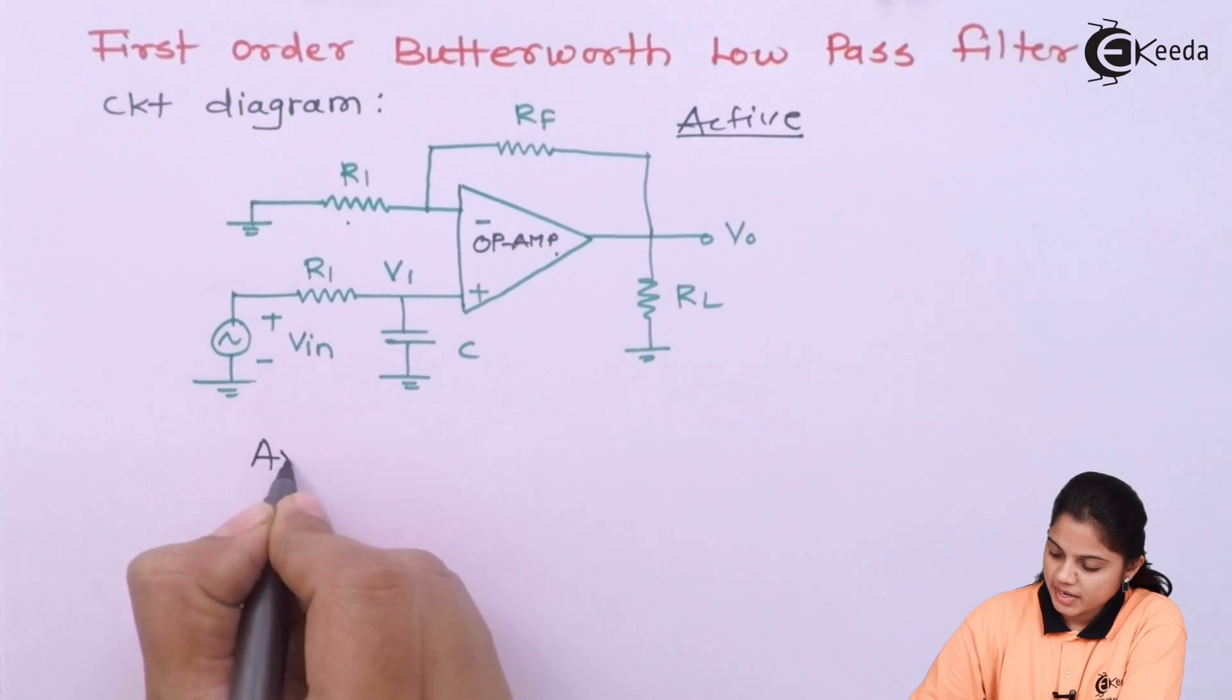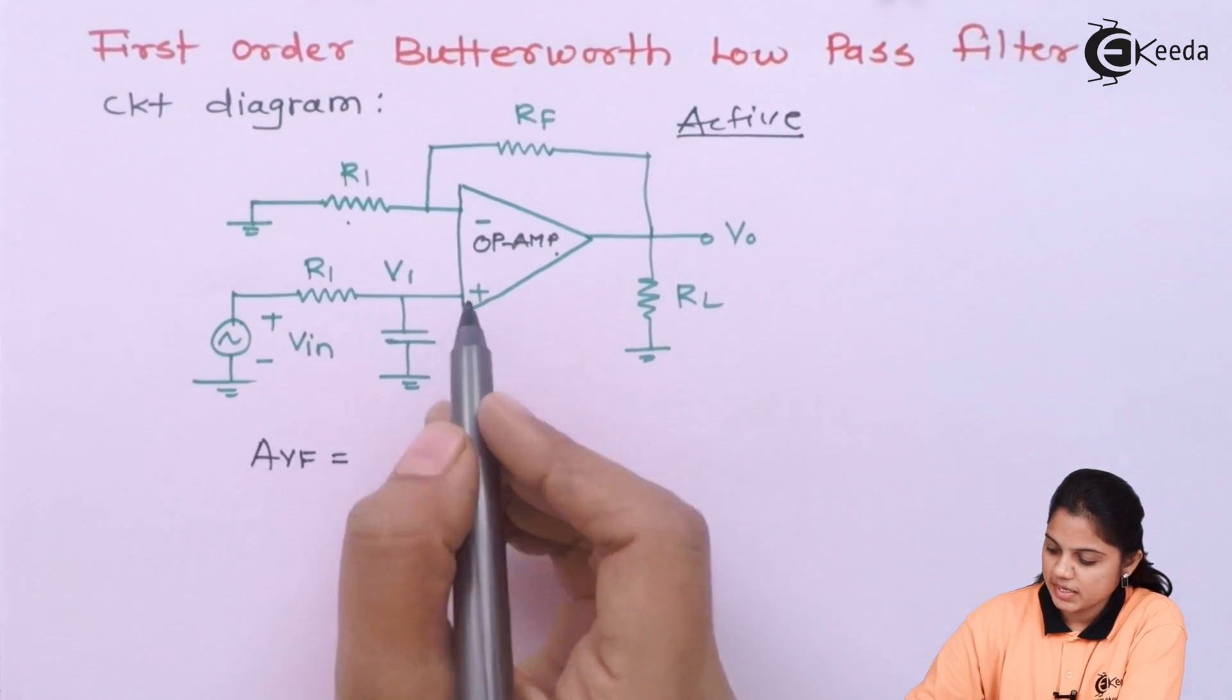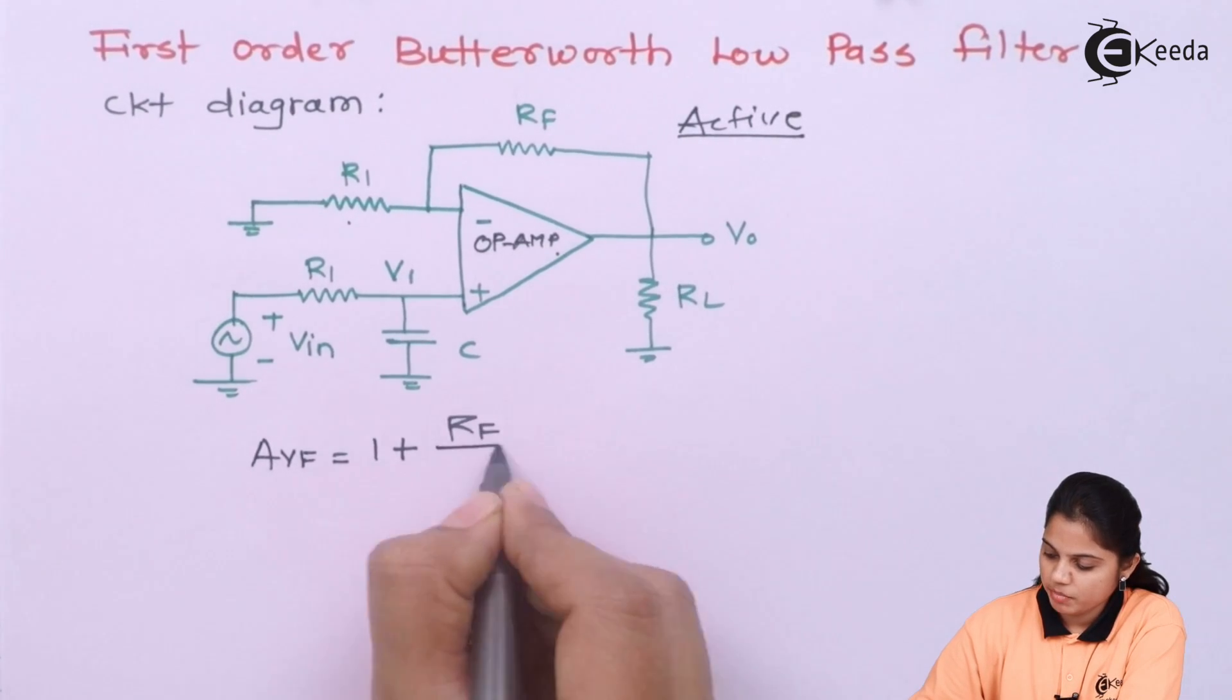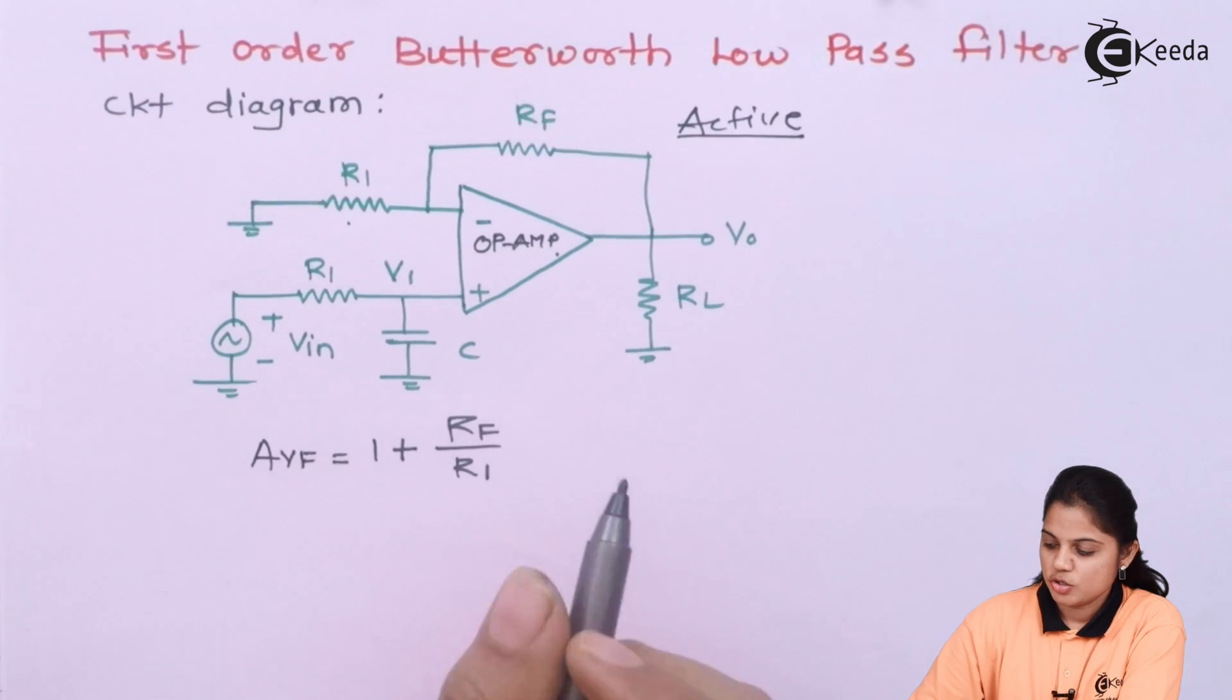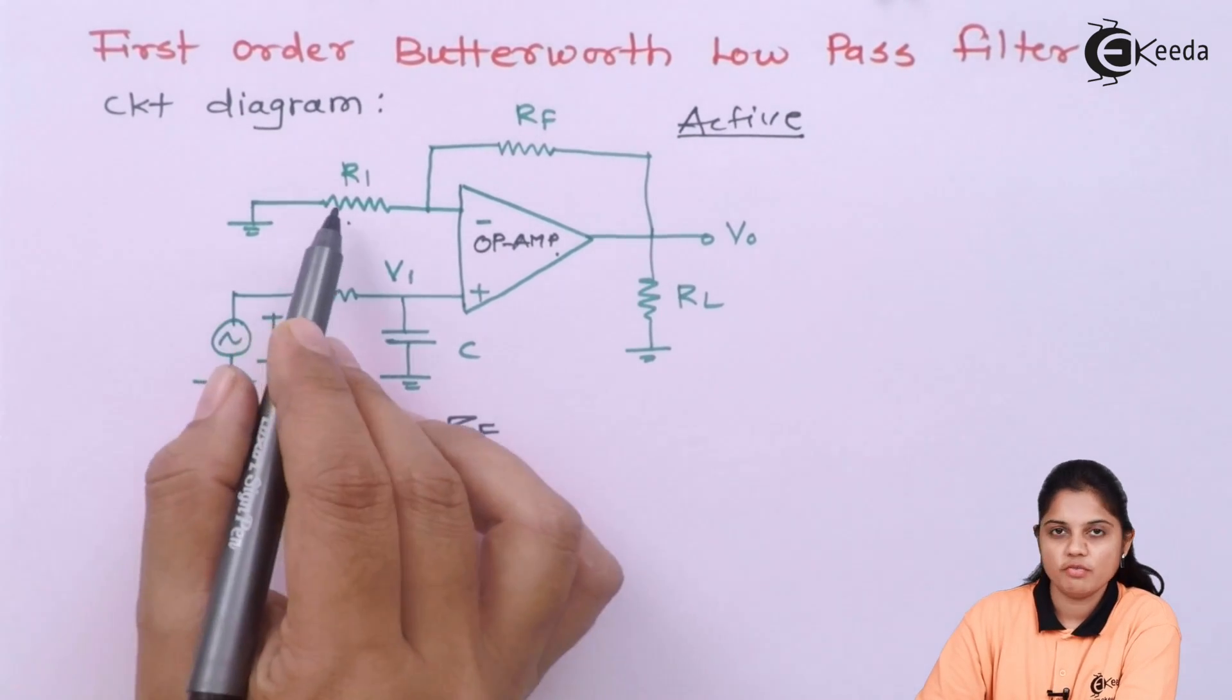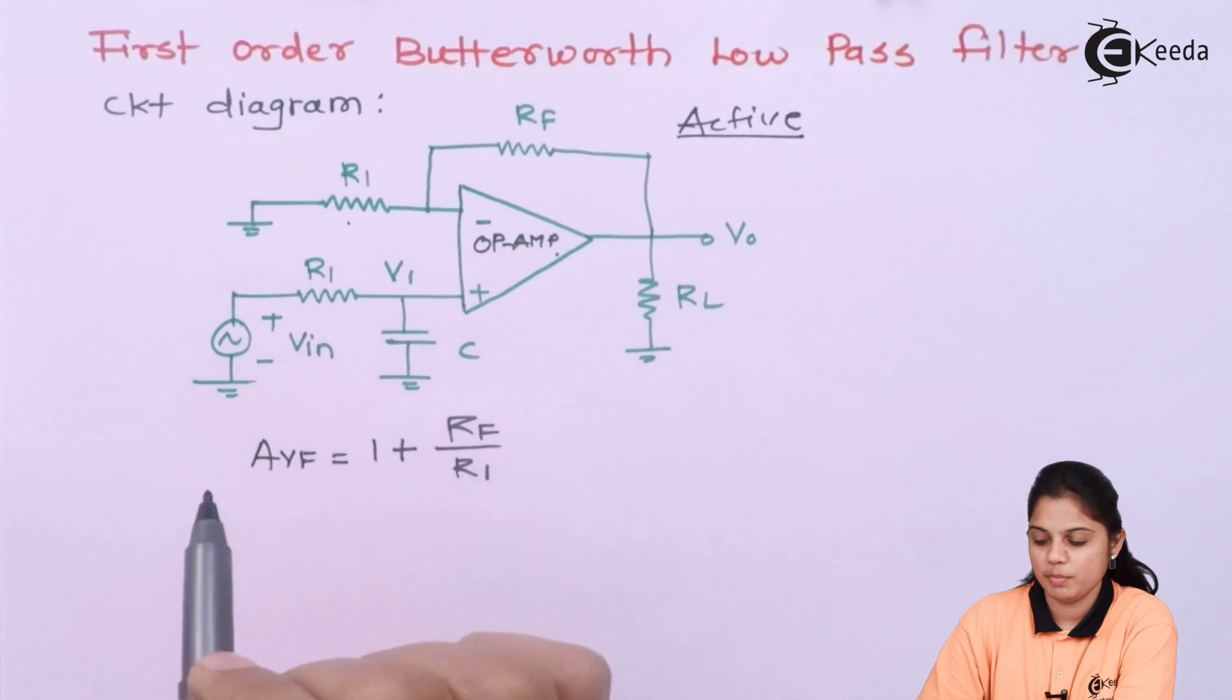So you can write the gain of an amplifier. Since it is a non-inverting configuration, the gain will be, the closed loop gain will be 1 plus RF upon R1. So the feedback resistance and the input resistance R1 will decide the gain of an amplifier.